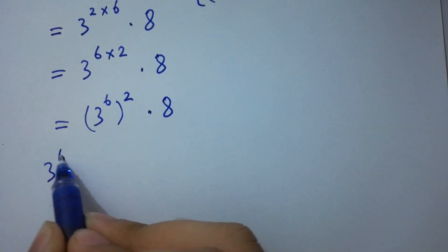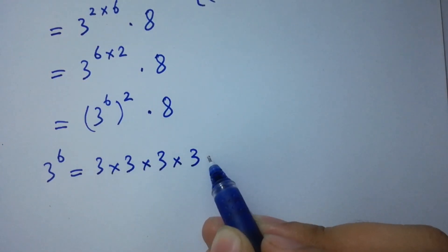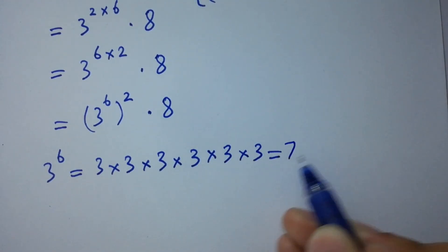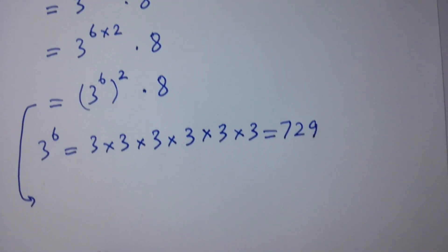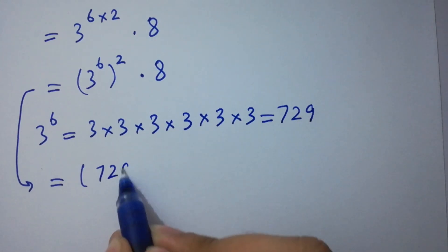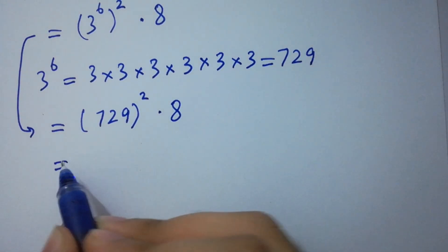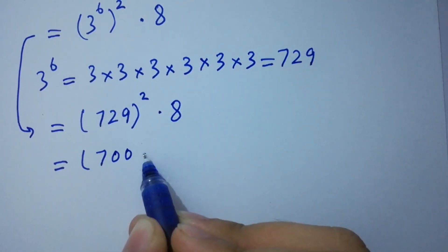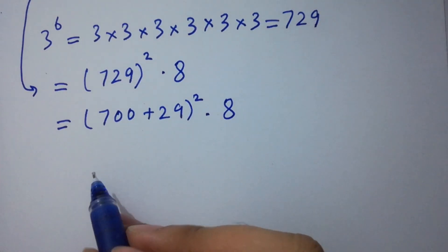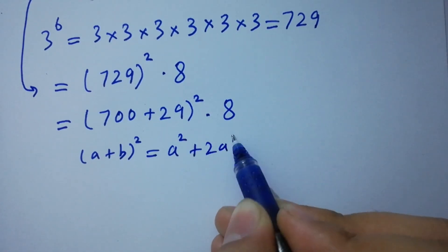So it will be 8 times (3 to the power 6) squared. As 3 to the power 6 equals 3 times 3 is 9, 9 times 3 is 27, 27 times 3 is 81, 81 times 3 is 243, and 243 times 3 is 729. So it will be 729 squared times 8. We know the formula of (a plus b) whole squared which is equal to a squared plus 2ab plus b squared.